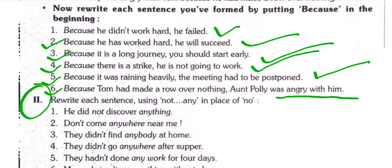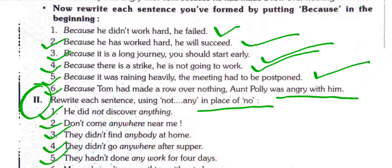Rewrite each sentence using 'not any' in place of 'no': 'He did not discover anything.' 'Don't come anywhere near me.' 'They did not find anybody at home.' 'They did not go anywhere after supper.' 'They had not done any work for four days.'